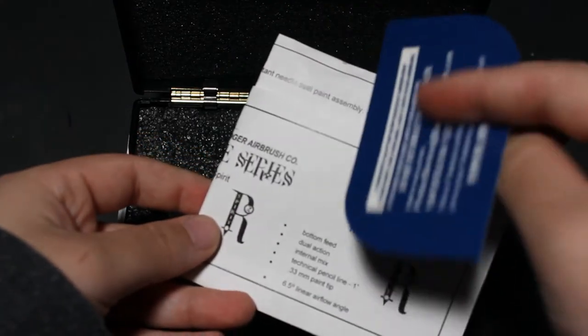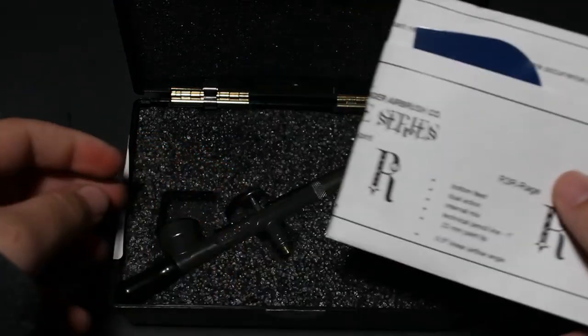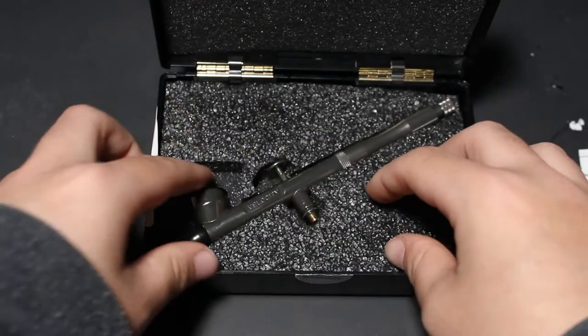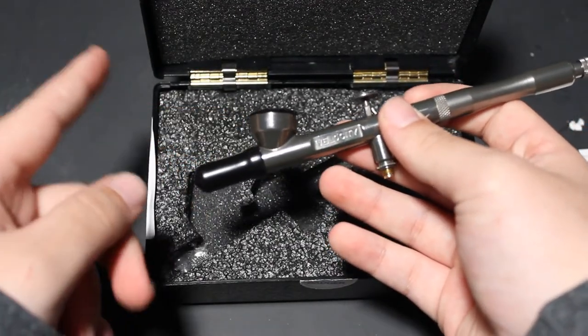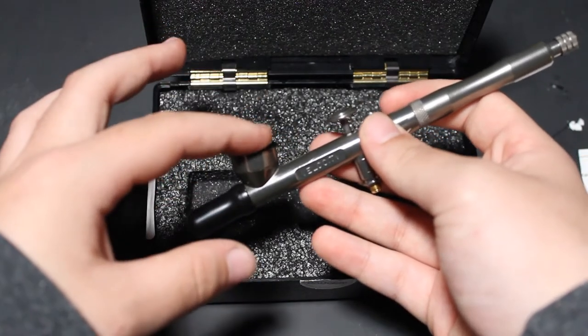You also get this Badger card, which basically tells you nothing, except the contact info. Then we get the airbrush. Airbrush looks nice. Comes with a cap on the front, as well as on the paint jar holder thing.